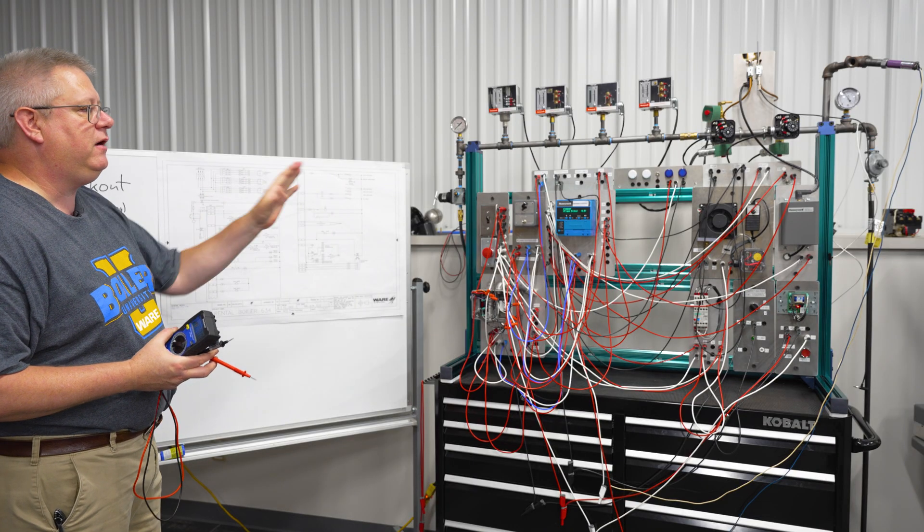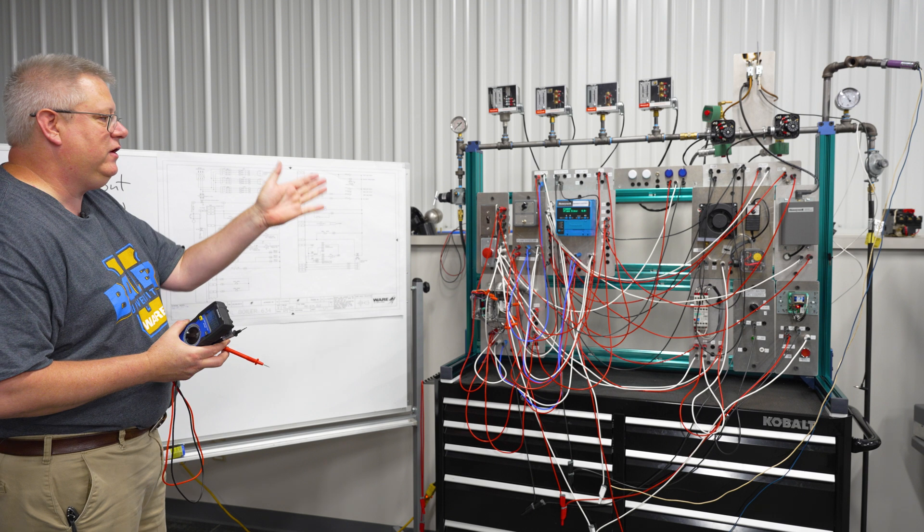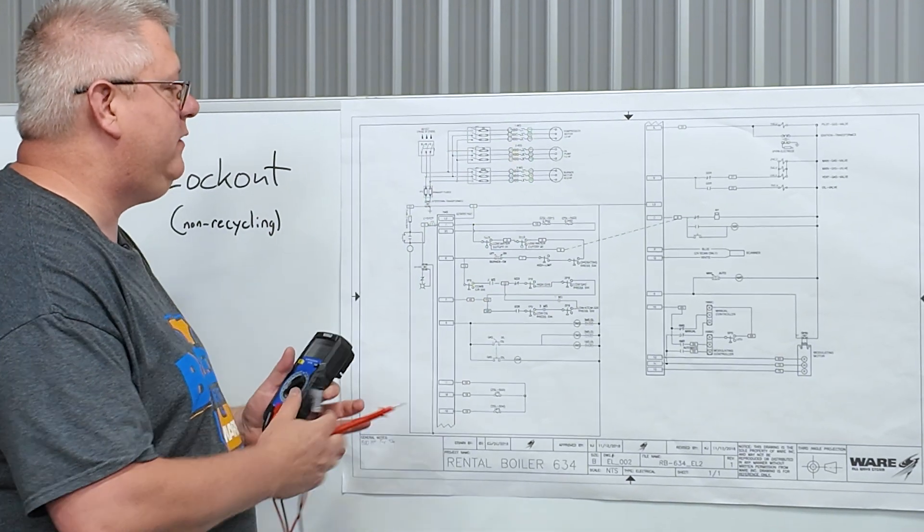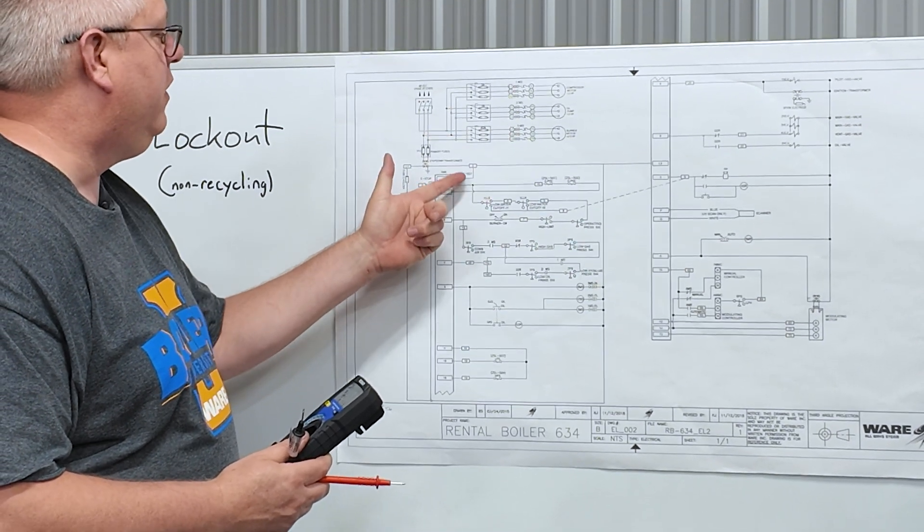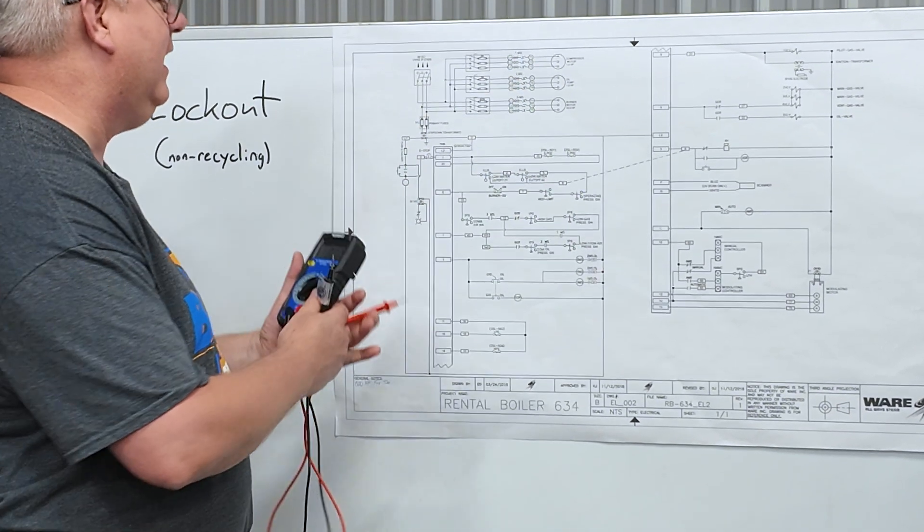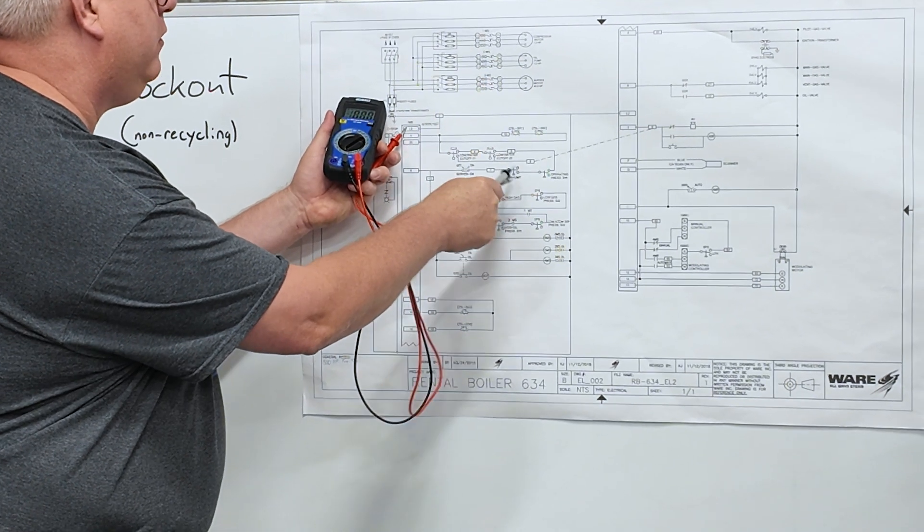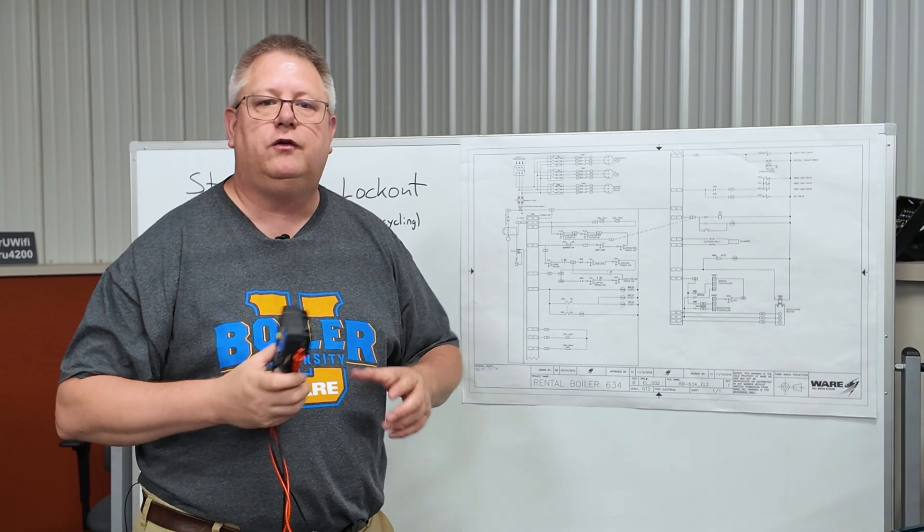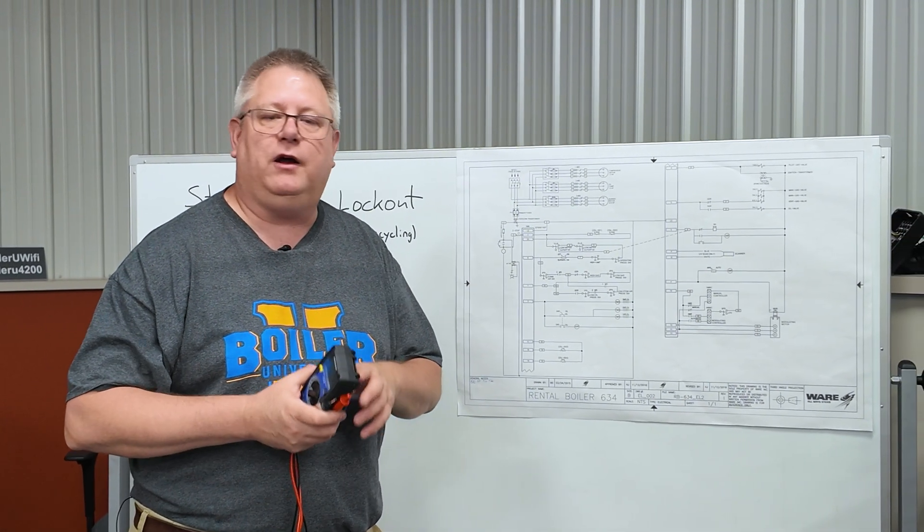On a unit without a print, I've got to chase wire through conduit to find which in a series of switches is tripped. But if I've got a print, I can simply look at the limit series and take a meter and test terminals in the panel and quickly narrow down where that problem is.